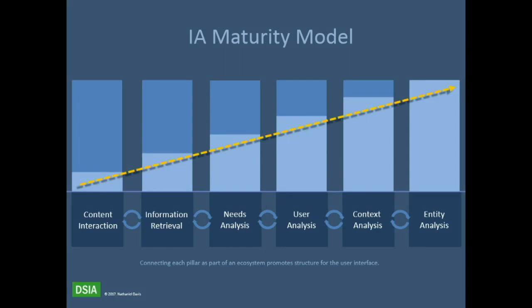In an organization, maturity models typically move from left to right. It's going to be very common that you're dealing with the surface modeling activities around content interaction and information retrieval, but your objective is to mature your organization to model all the way to the right side.